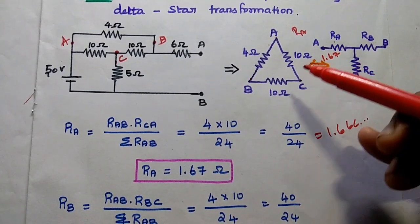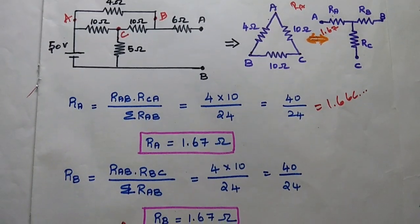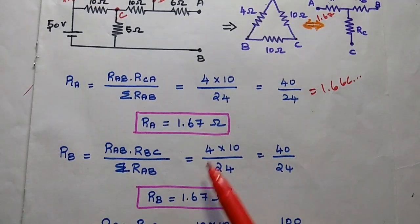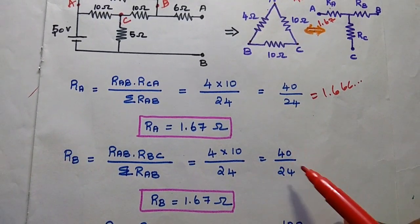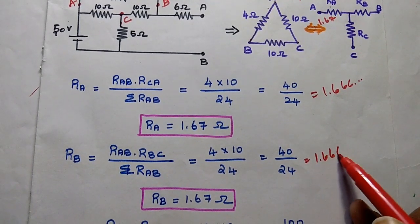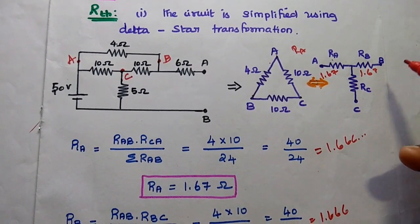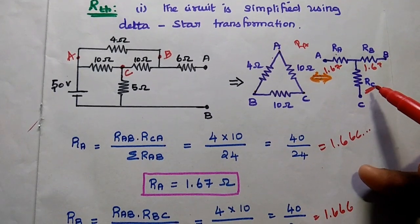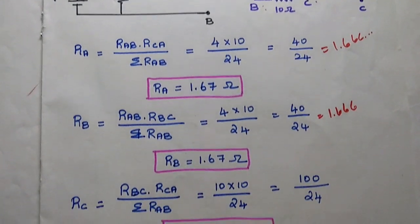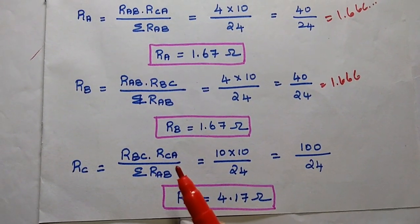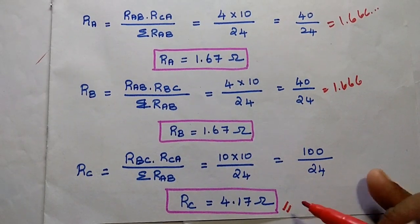Next we find RB. RB = (RAB × RBC) / (sum of all resistors) = (4 × 10) / 24 = 40/24 = 1.67 ohm. Then for RC: RC = (RBC × RCA) / (sum of all resistors) = (10 × 10) / 24, and we get the value as 4.17 ohm.